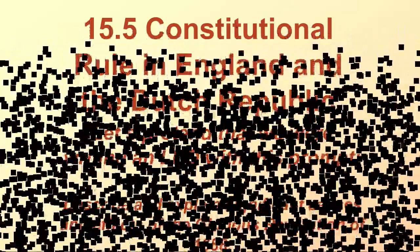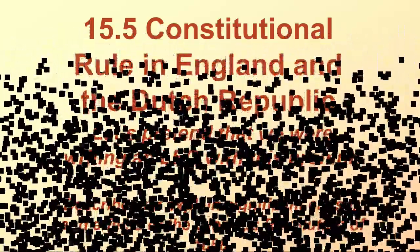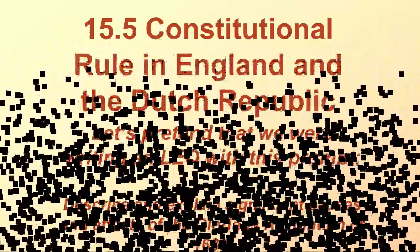This is Lesson 15.5, Constitutional Rule in England and the Dutch Republic. What do England and the Dutch Republic have in common? They both have constitutions.